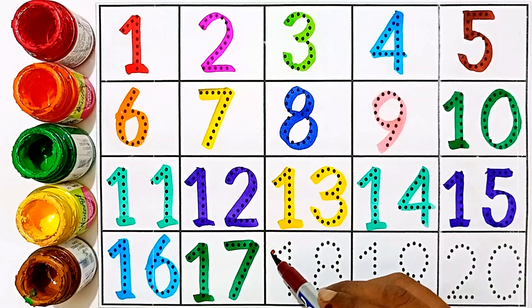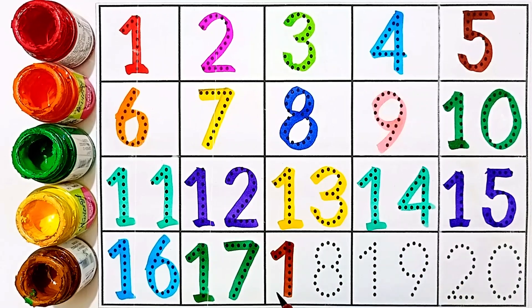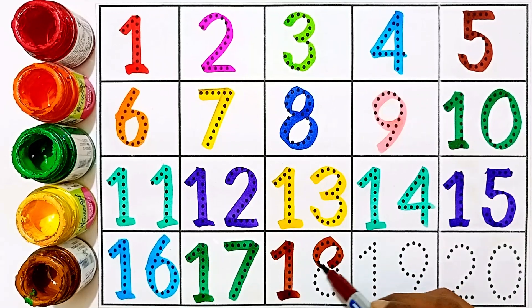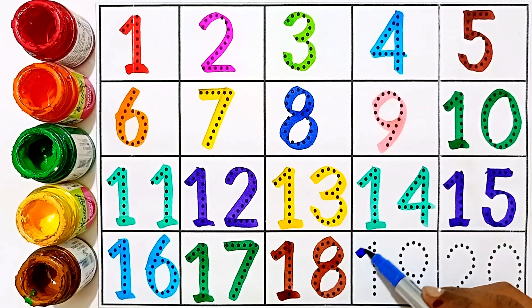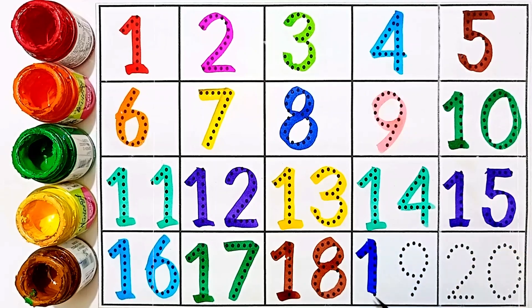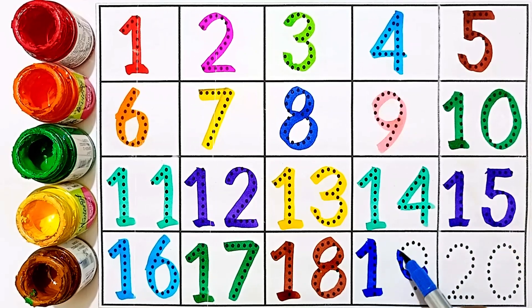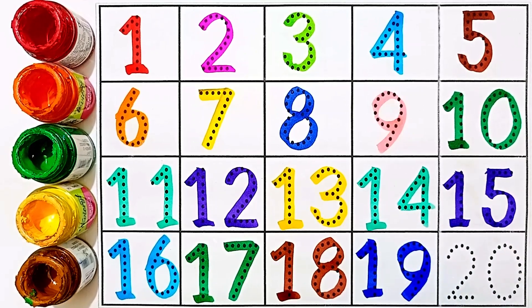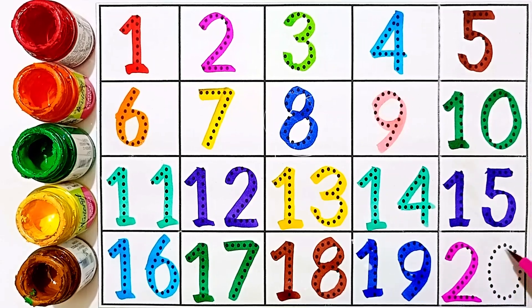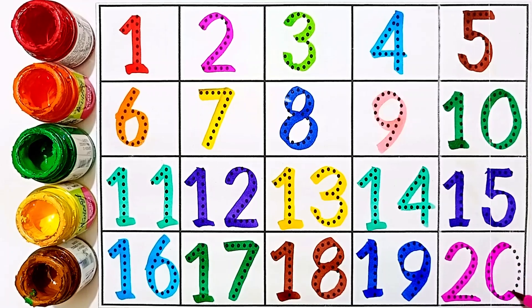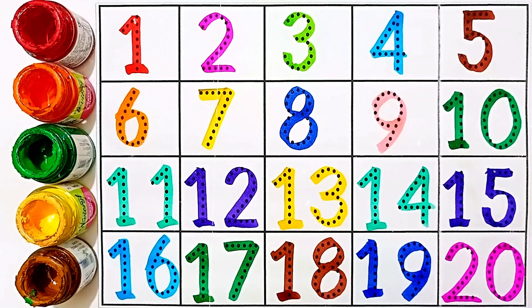Eighteen, one and eight, eighteen. Nineteen, one and nine, nineteen. And twenty, pink color twenty. Two and zero, twenty.